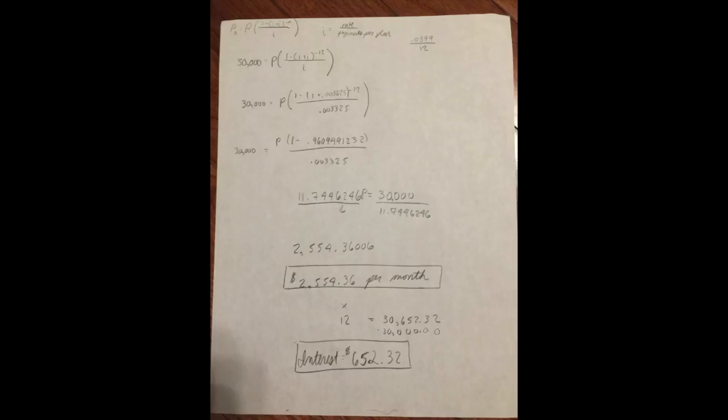So, you get 1 minus .9609491232, and you divide it by .003325. Now, this is where the fun begins. We have the solution, which is 11.7446246P, and you divide that all by 30,000, because that's your loan. And that is how you get your amount per month. So, your amount per month, once you round it, is $2,554.36, and this is all for one year.